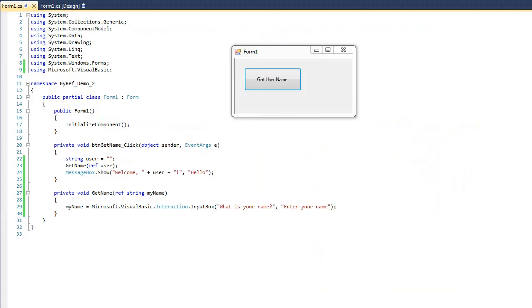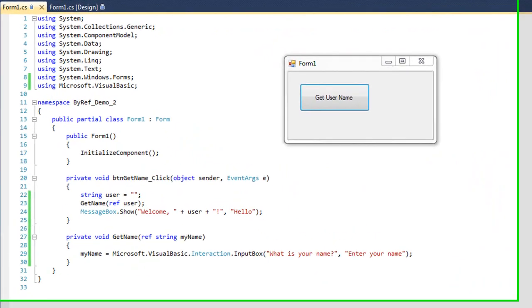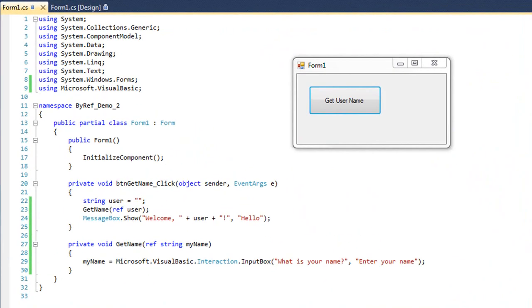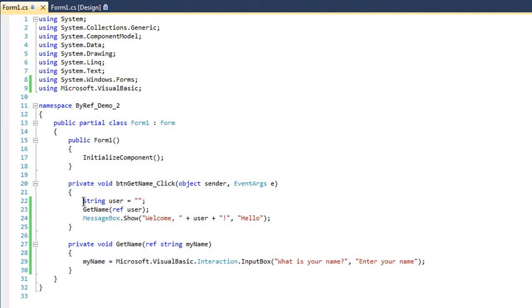The common way that passing values by reference is used is in getting input. And so what I have here is a simple little C-sharp application. I assume there's a button called getUserName. The name of the button is btngetName. And it has a string variable called user, which is set to null. And I'm going to call a voided function, or in essence a sub procedure, that it's going to pass the value of user by reference.